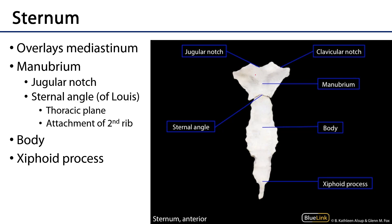The sternum is tripartite: there's a manubrium, a body, and a xiphoid process. The manubrium is the most superior element of the sternum, and at its superior edge there's a jugular notch — you can go ahead and palpate that jugular notch — and along its inferior border it creates a sternal angle with the body. This sternal angle, sometimes called the angle of Lewis, is what sets the anterior border for the thoracic plane.